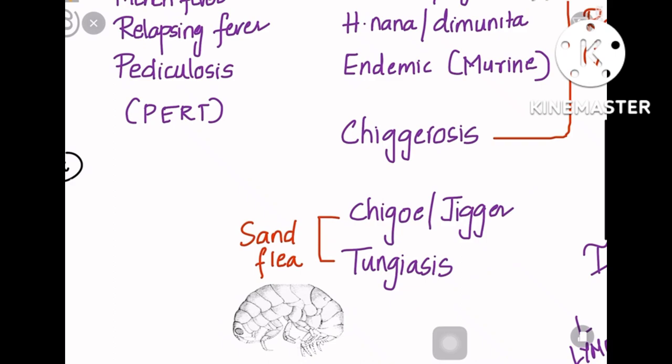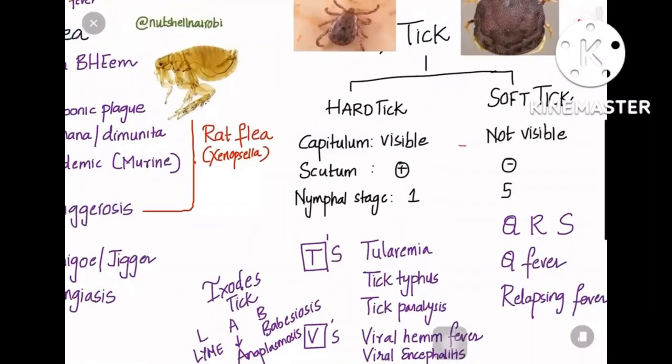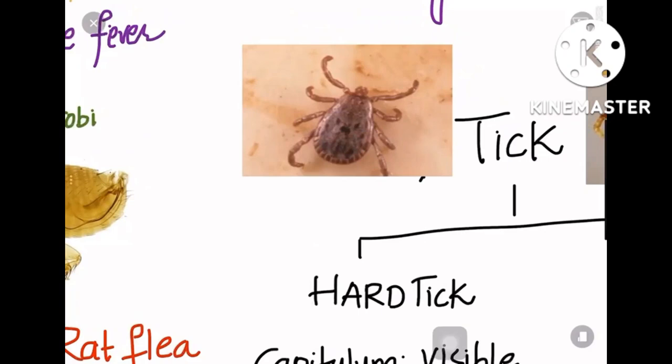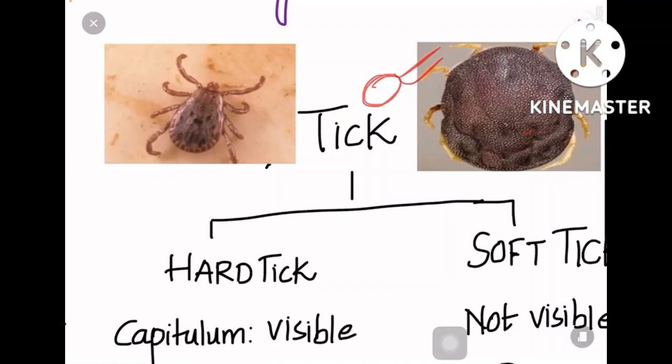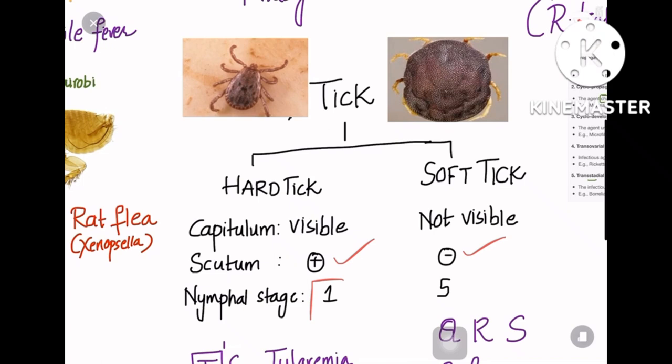Blackfly, called Simulium, causes onchocerciasis. Coming to ticks: there are two kinds — hard tick and soft tick. In hard tick, the capitulum is visible, whereas in soft tick it is not visible. Scutum is present in hard tick and absent in soft tick. Hard tick has only one nymphal stage, whereas soft tick has five nymphal stages — 'S for five' helps remember soft tick.